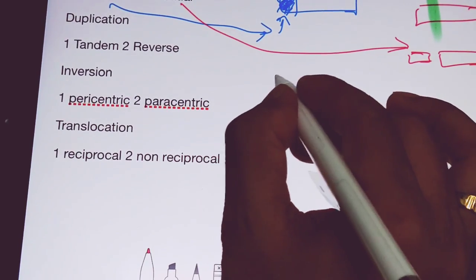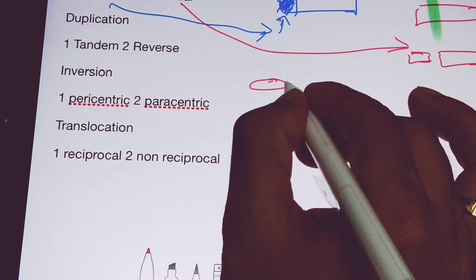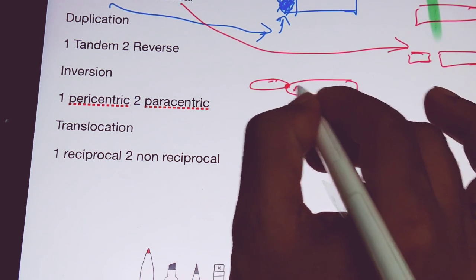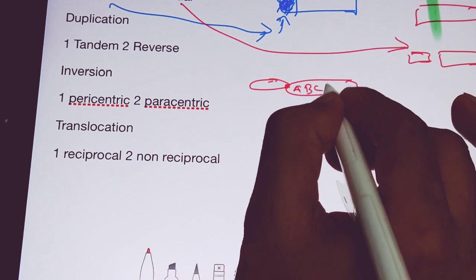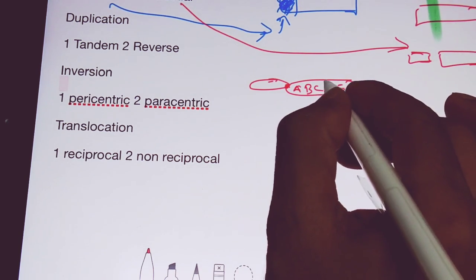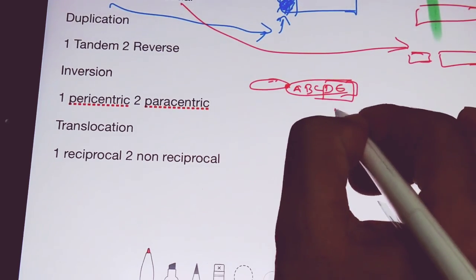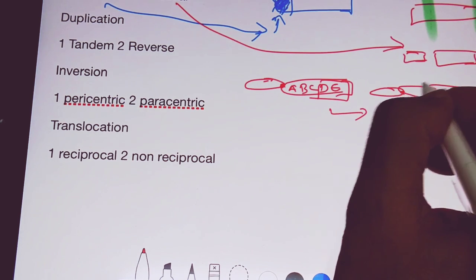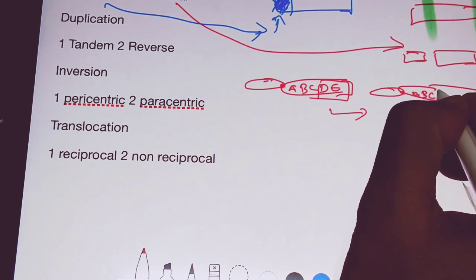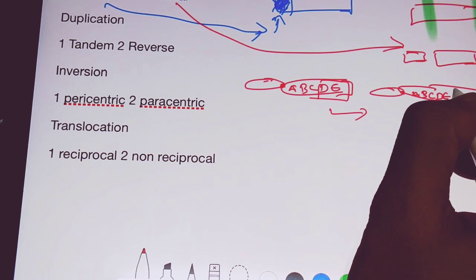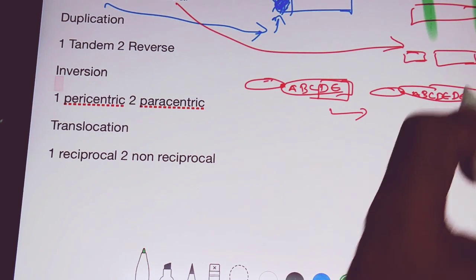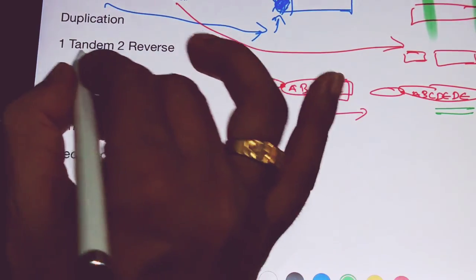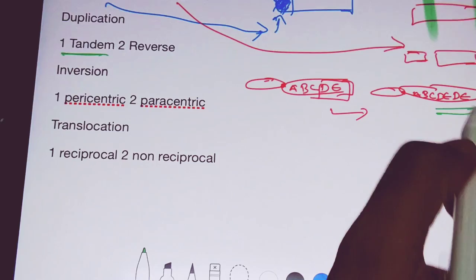In case of tandem duplication, if this is a segment and a portion of it gets repeated, this repetition is called a tandem duplication event.